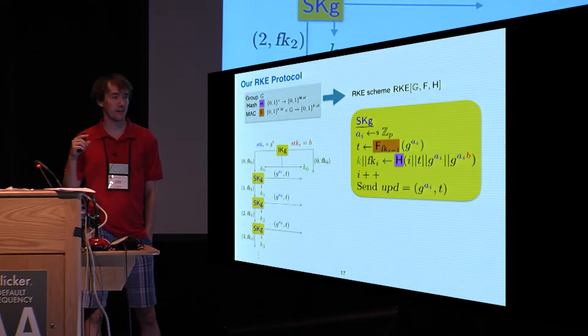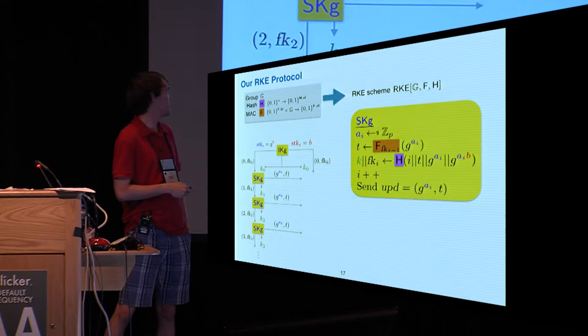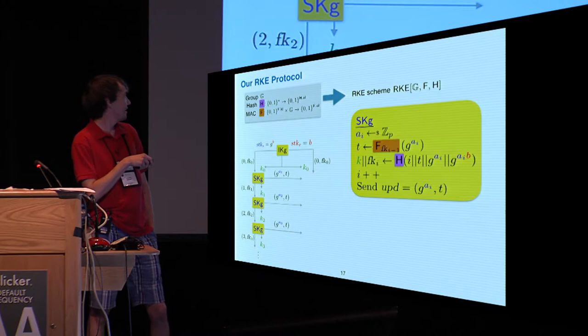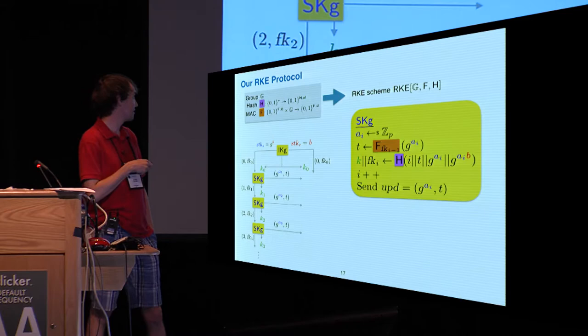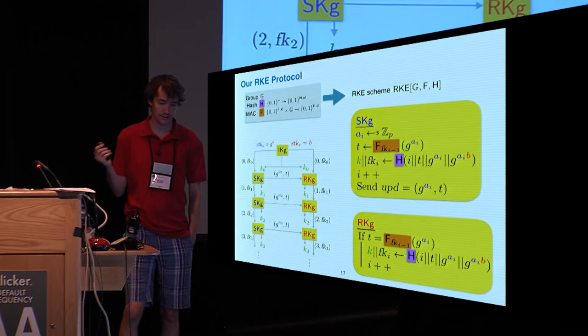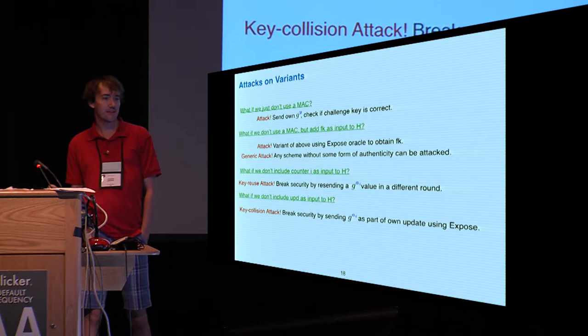Then, every time we want to perform a ratchet, the sender will create its own secret exponent, which it then creates the public value of to send to the receiver. To authenticate this, it uses the MAC to authenticate the value, and then we apply the hash function to the counter, the tag, the value we're sending over, and this part, the magic sauce of what we're hoping is hard for an adversary to guess, hash them all together to get both the next symmetric key and the next key for our hash function. The receiver then, given this updated information, simply checks that the tag is correct, and assuming it is, can obtain the same shared keys using the hash function again.